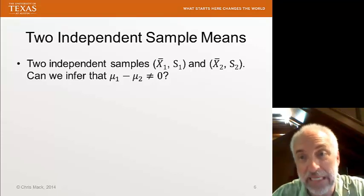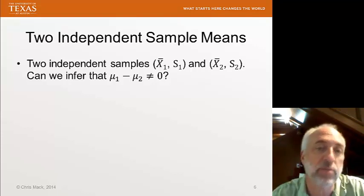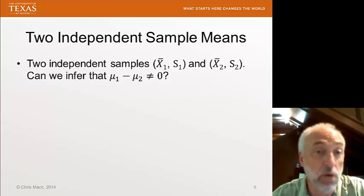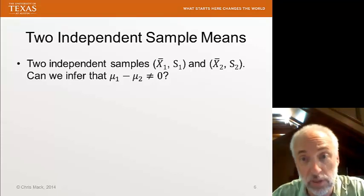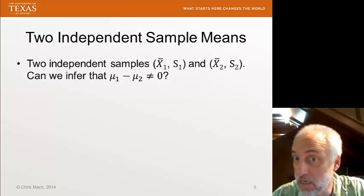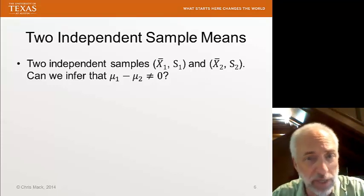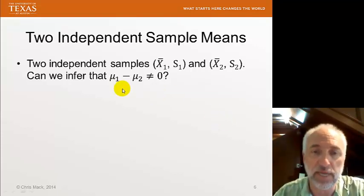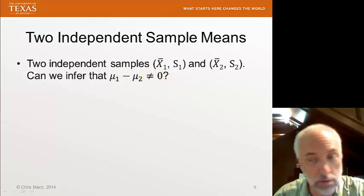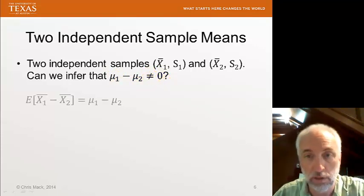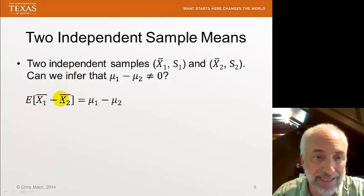If we have two independent samples, we can use their independence to do calculations of expectation and variance. So if I have two samples, they'll have a sample mean and a sample standard deviation. We want to know, can we infer that the population means are different? That is, can we infer that mu1 minus mu2 is not equal to zero? Well, let's use as our statistic the difference in the sample means, X1 bar minus X2 bar.